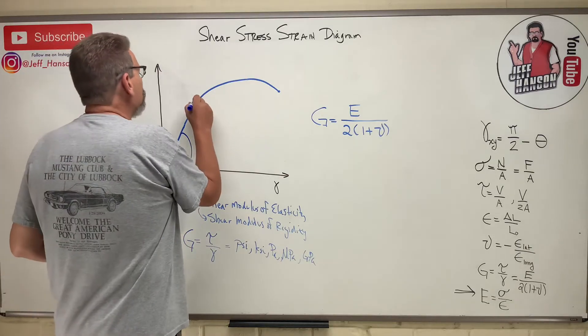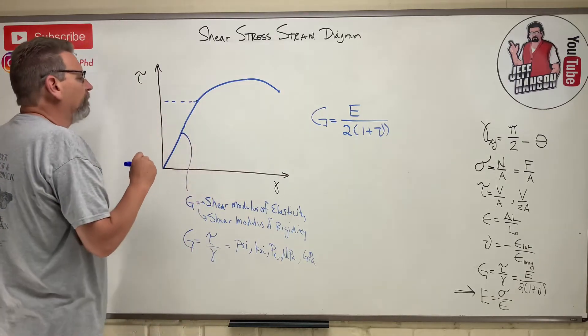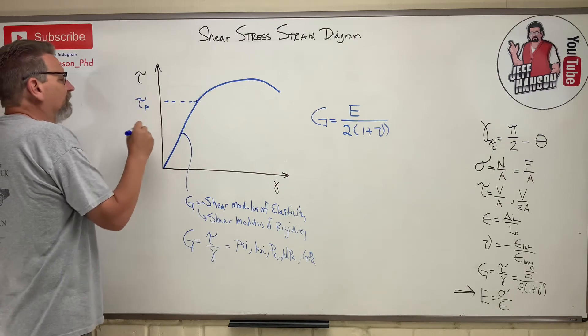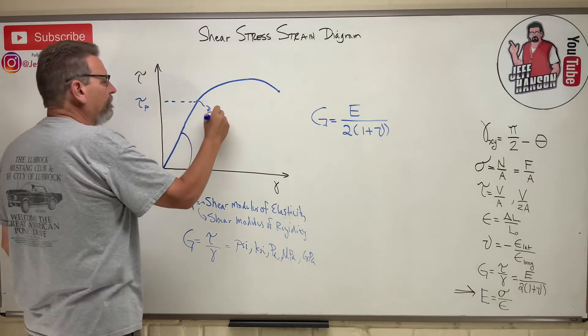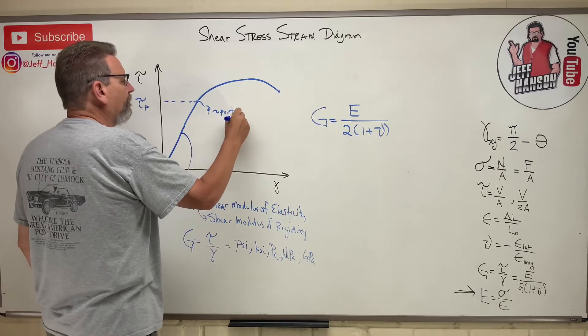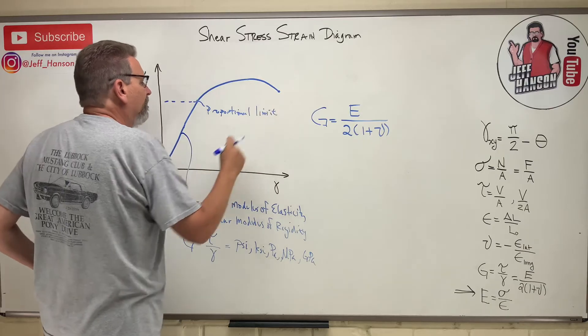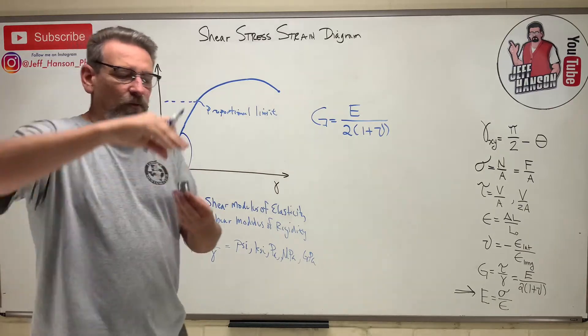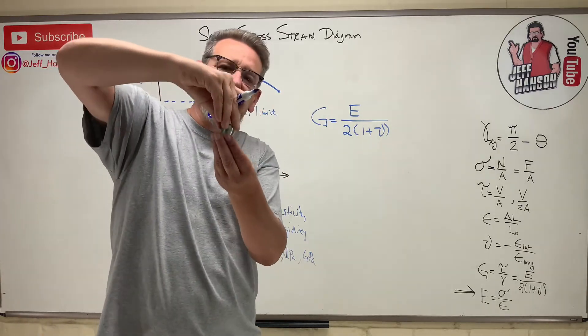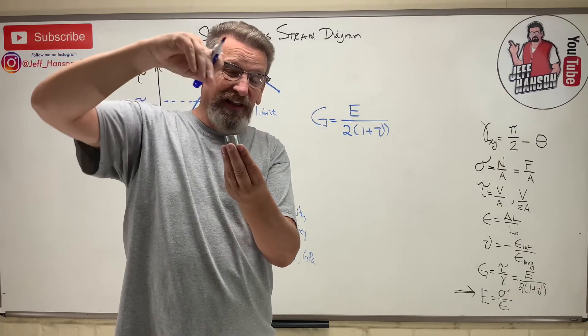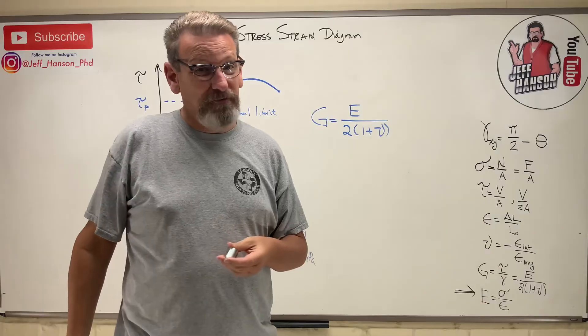So also, just like this, so this is what we call yield, or we call it a proportional limit. This is the proportional limit. And that's the point at which when I start twisting my slinky here, that I twist it so far, now when I let it go, it doesn't go back to where it started from.